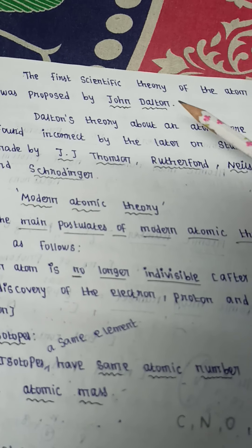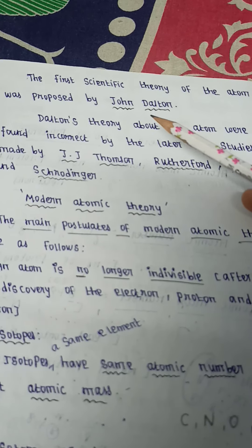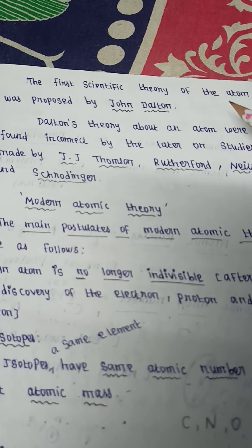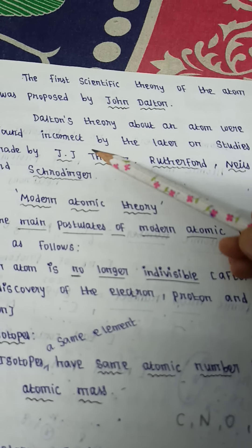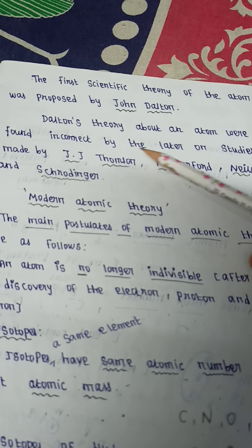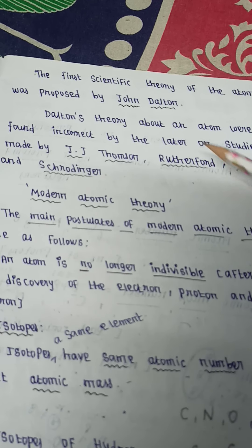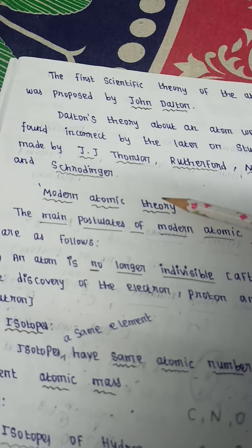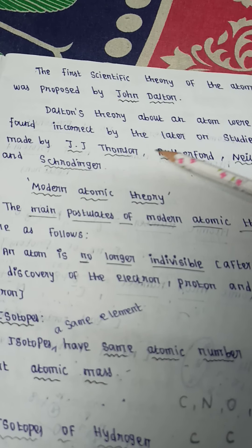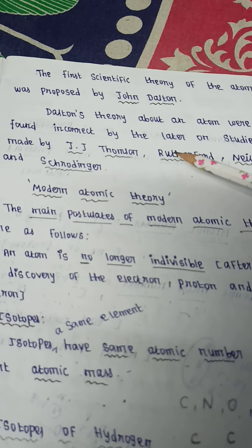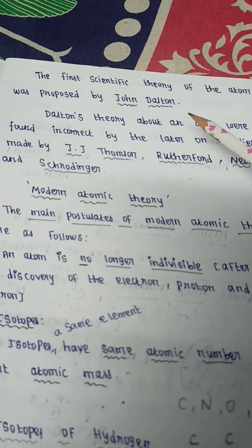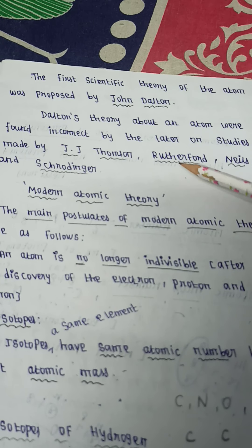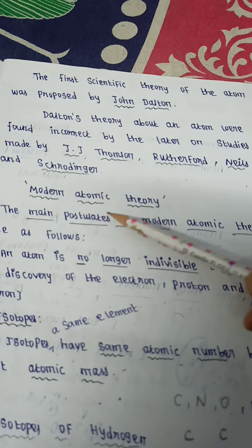The first scientific theory of an atom was proposed by John Dalton. Dalton's atomic theory was later found incorrect by studies made by J.J. Thompson, Rutherford, Niels Bohr, and Schrödinger. So John Dalton's atomic theory has some incorrect mistakes.